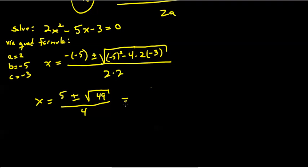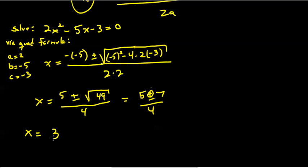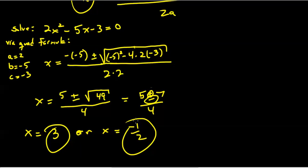Since we all know the square root of 49 is 7, I can write this down: 5 plus or minus 7 over 4. Plus or minus means just that — you take the plus or minus option, leading to two solutions for x. Well, 5 plus 7 is 12, and 12 over 4 is 3. Or 5 minus 7 is negative 2, and negative 2 fourths is negative 1 half. So I've got two solutions: x equals 3, or x equals minus 1 half.